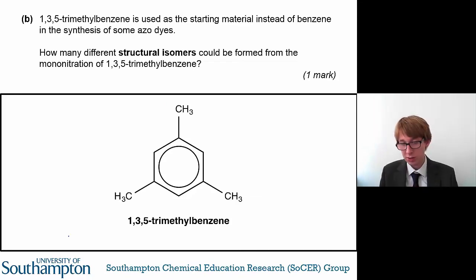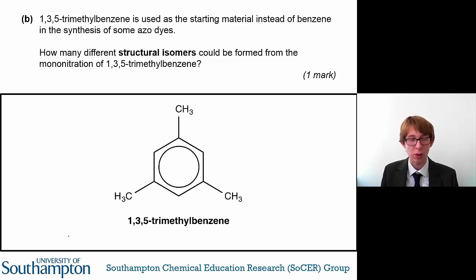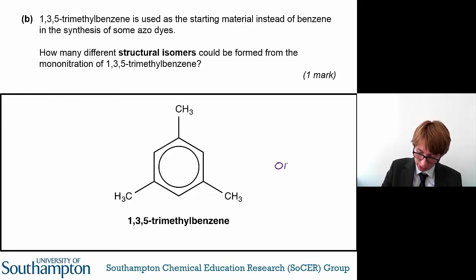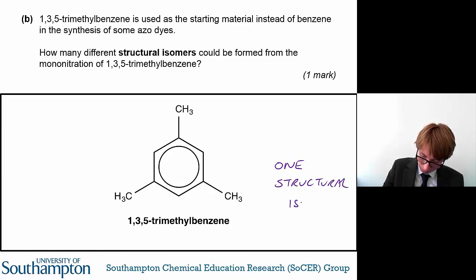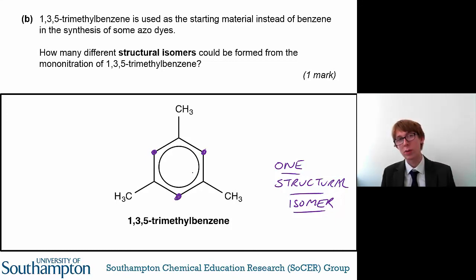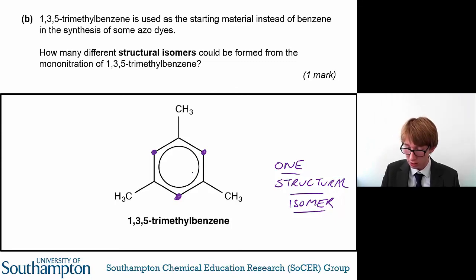The next part of this question is fairly straightforward. 1,3,5-trimethylbenzene is used as the starting material instead of benzene. How many different structural isomers can be formed from the mononitration — so just one nitration — of 1,3,5-trimethylbenzene? The answer is one structural isomer, because all three of the carbon atoms where nitration could take place are equivalent to one another. You just need to say one structural isomer for the mark.